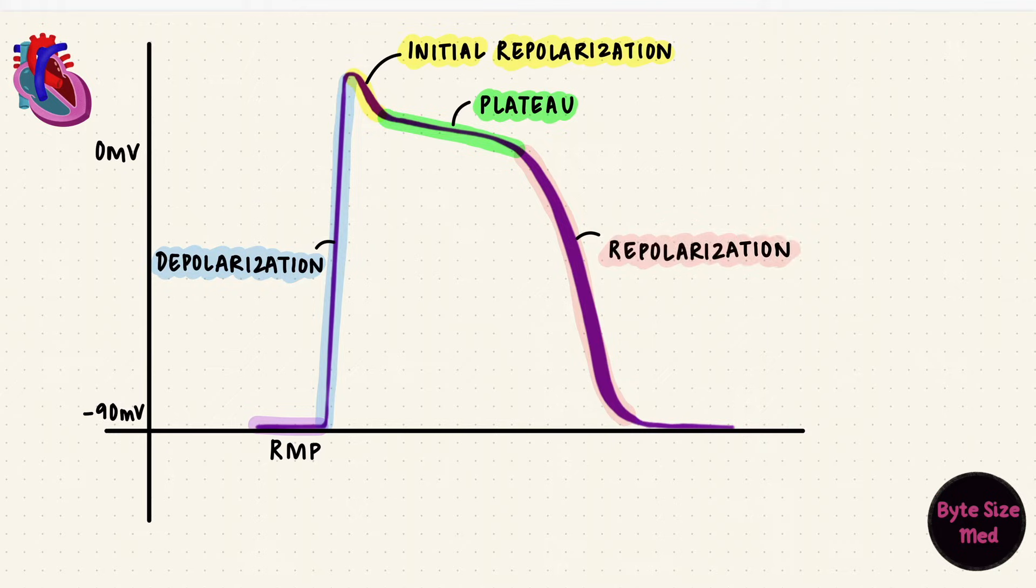Finally, there's repolarization back to the resting membrane potential. The upstroke is phase zero. The little notch that's repolarization is phase one. The plateau is phase two. The late repolarization is phase three. And phase four is rest.